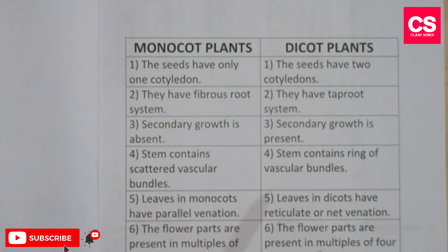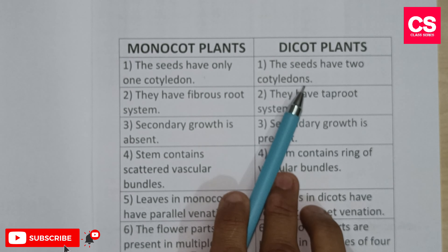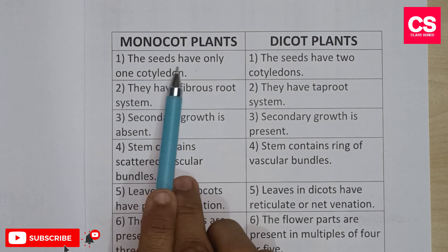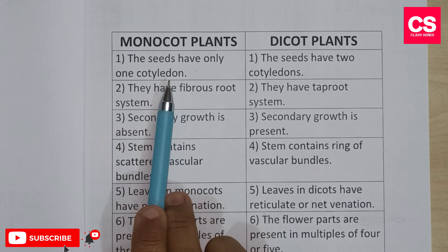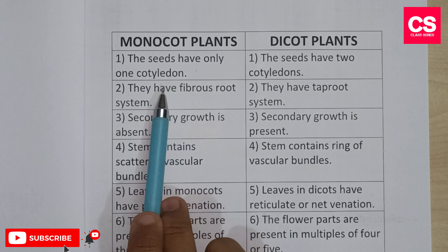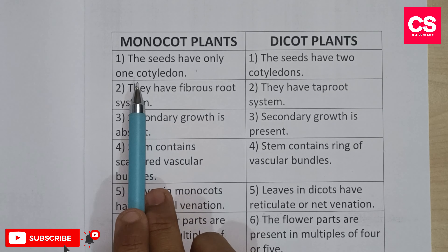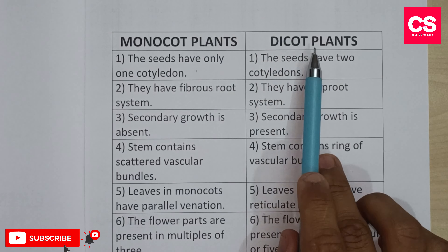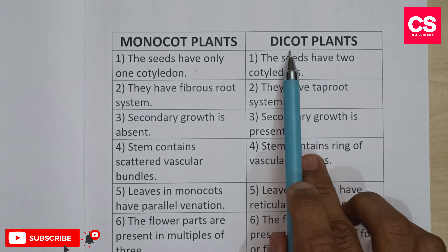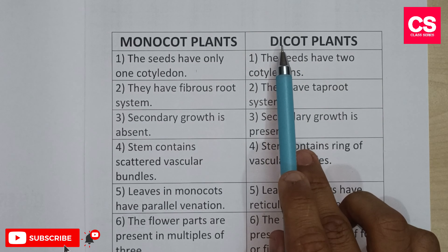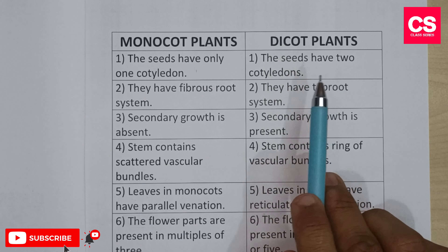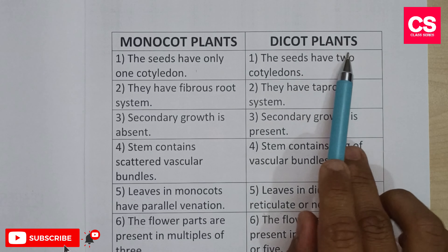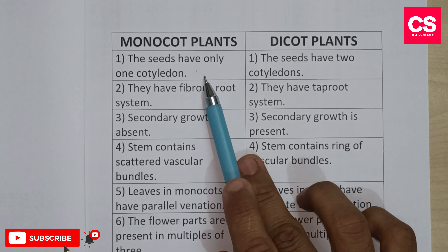The first column represents monocot plants and the second column represents dicot plants. The first difference: monocot plants have seeds with only one cotyledon, but dicot plants have seeds with two cotyledons.